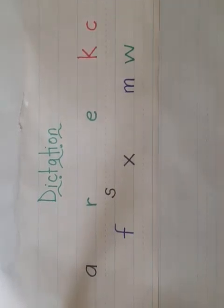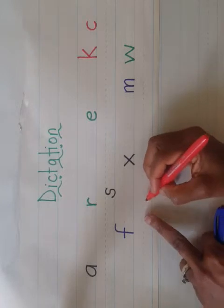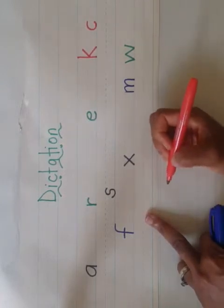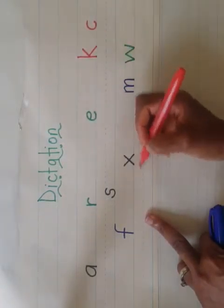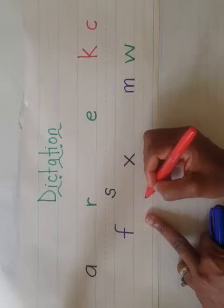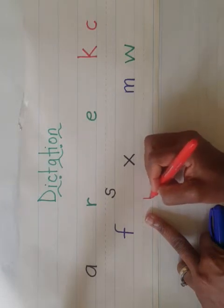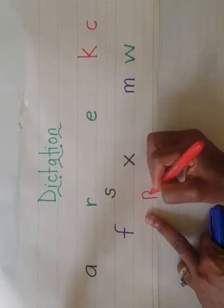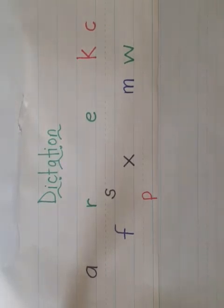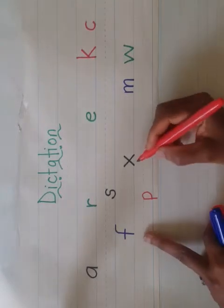Which letter makes the 'p' sound, as in pan? P as in pan — yes, the letter P makes the 'p' sound. Let's go write a P. What letter makes the 'b' sound, as in boy? B as in boy — it's the letter B. This is how to write a B.